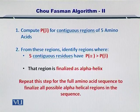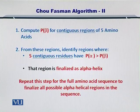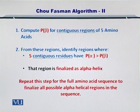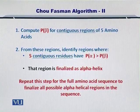You repeat this step for the full amino acid sequence to finalize all the alpha helices within it. This helps you identify and isolate the alpha helices and their corresponding amino acids from the protein sequence. The remaining amino acids can then be evaluated for formation of other secondary structures.